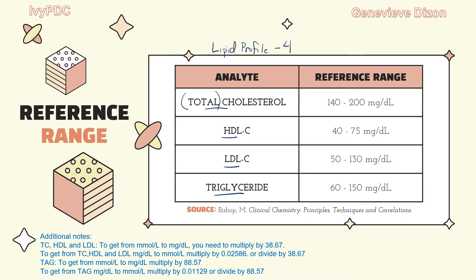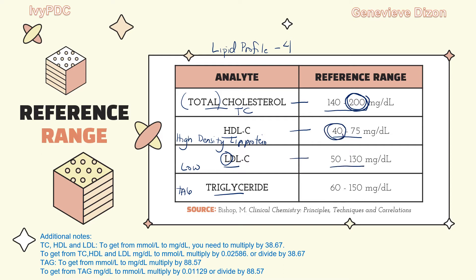Total cholesterol is sometimes only called as cholesterol or TC, while HDL stands for high density lipoprotein and LDL stands for low density lipoprotein. Triglyceride is sometimes abbreviated as TG or TAG. The reference range for total cholesterol is 140 to 200 mg/dL, HDL has 40 to 70, LDL has 50 to 130, and triglyceride has 60 to 150, all in milligrams per deciliter.